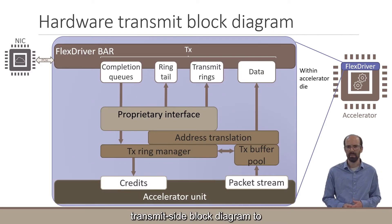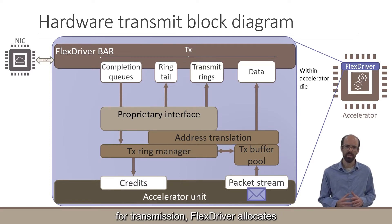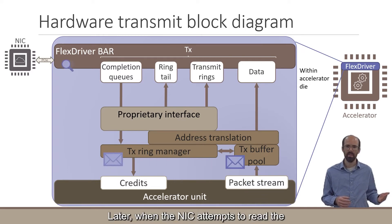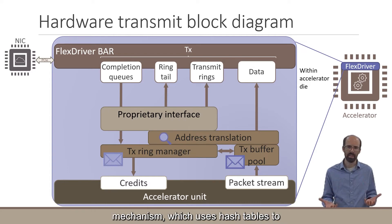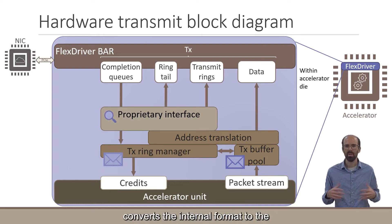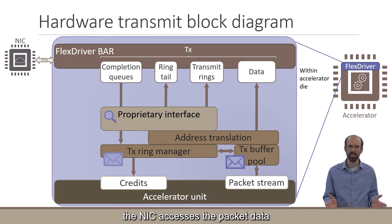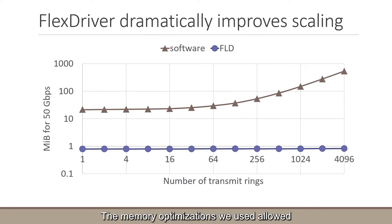Let's look at FlexDriver's transmit-side block diagram to understand its translation better. When the accelerator sends a message for transmission, FlexDriver allocates a buffer in the buffer pool and a descriptor in the ring manager. Later, when the NIC attempts to read the transmission ring, the PCIe read request goes to an address translation mechanism, which uses hash tables to translate from the linear address space expected by the NIC to the internal pools. A proprietary interface block also converts the internal format to the desired proprietary format of the NIC. Similar translations occur when the NIC accesses packet data or writes completion notifications. These memory optimizations allow us to reduce the needed memory and scale much better with the number of rings.